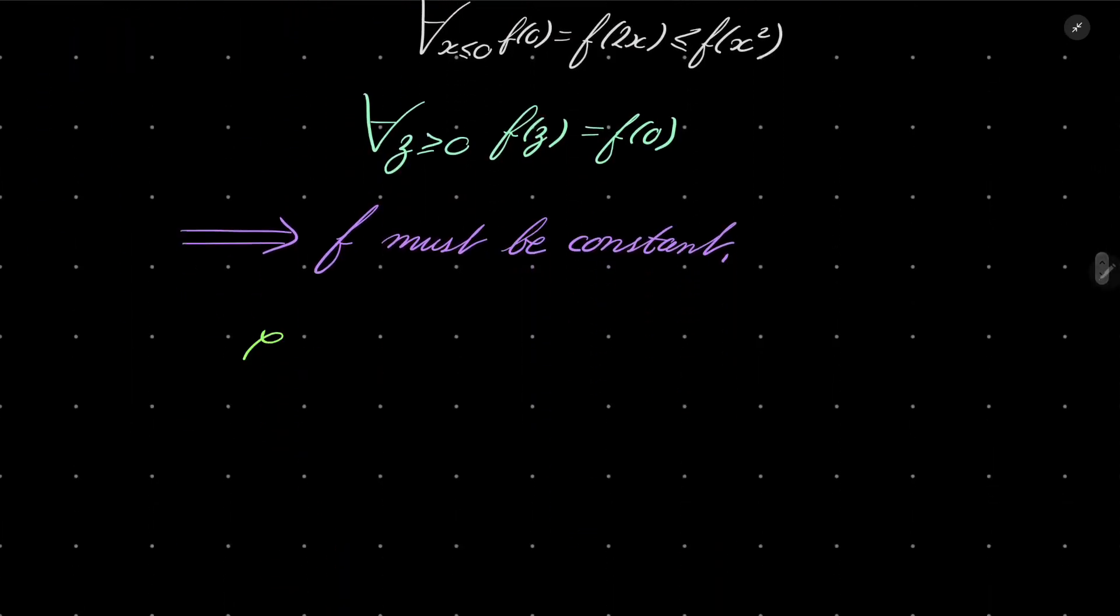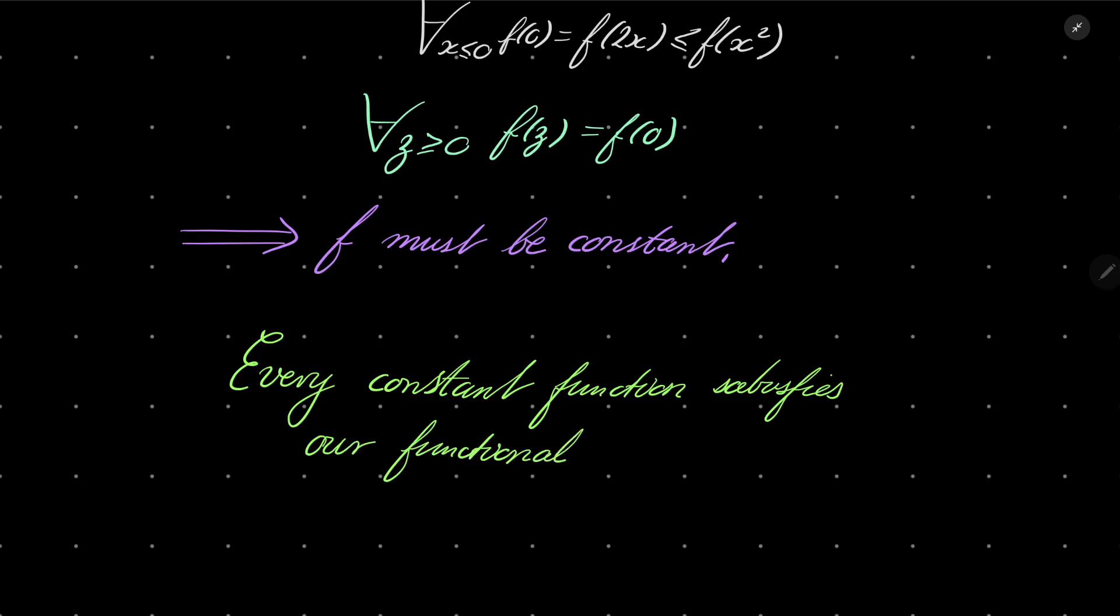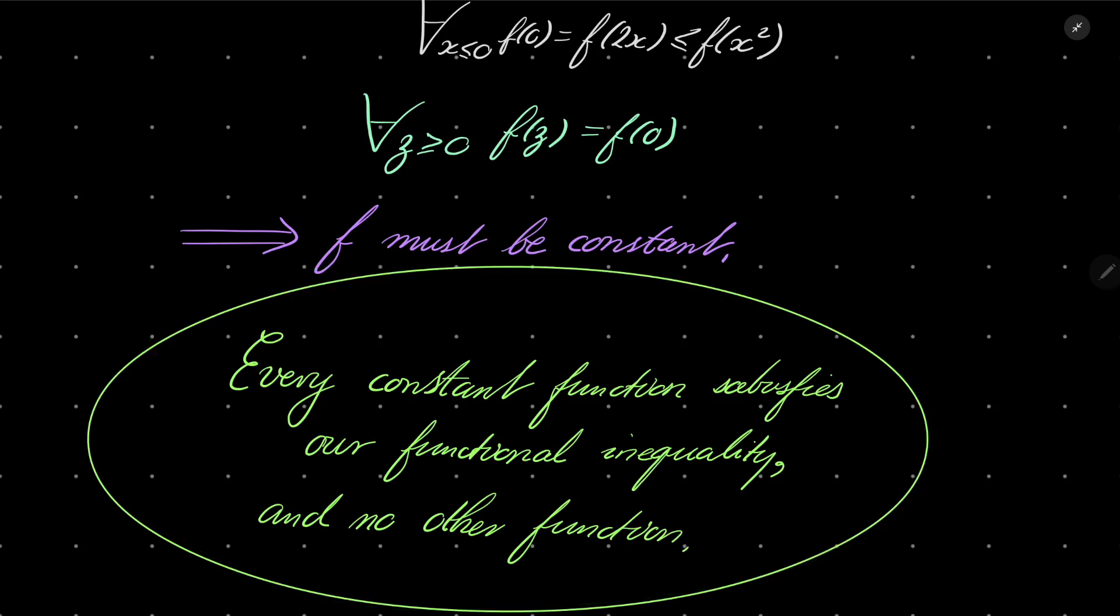So every constant function satisfies our functional inequality, and no other function. And that is actually our answer. The solution set of our functional inequality consists of constant functions.